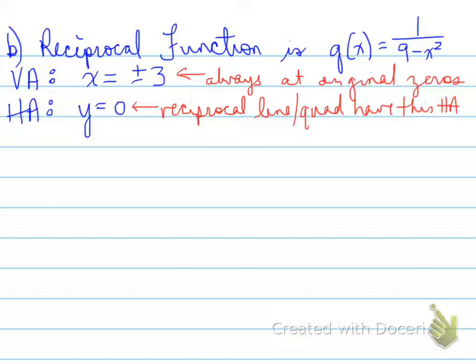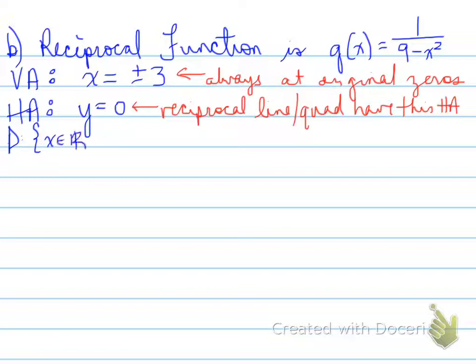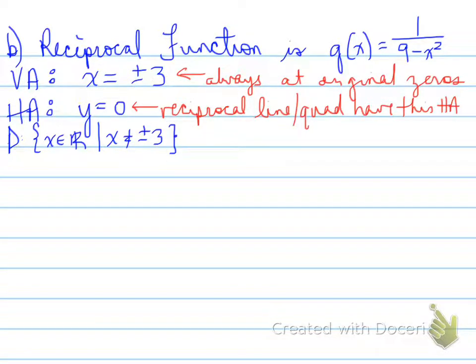The reciprocal function has two vertical asymptotes. The domain is restricted by those asymptotes, so the function goes from negative infinity to negative 3, then negative 3 to 3, then 3 to infinity — excluding x equals negative 3 and x equals 3. The vertical asymptotes directly affect the domain.